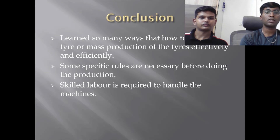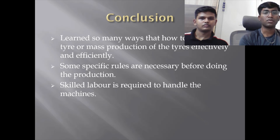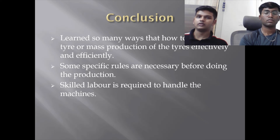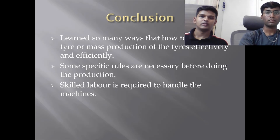In conclusion, we have learnt about the mass production of tyres effectively and efficiently. Some specific rules are necessary for protection. Skilled labour is required to handle the machines, as all the machines are very important to the process. Since this is a mass-manufactured product running on a tight and automated system, when something goes wrong, skilled people need to come in and repair everything quickly. Thank you sir, thank you for giving us this opportunity and letting us learn about this new topic.